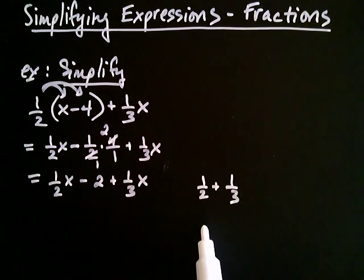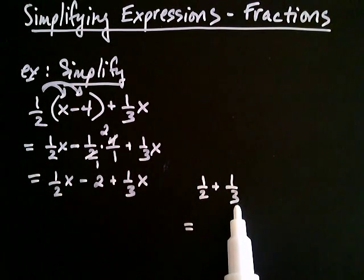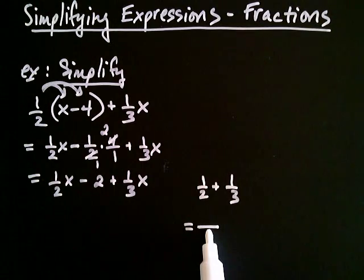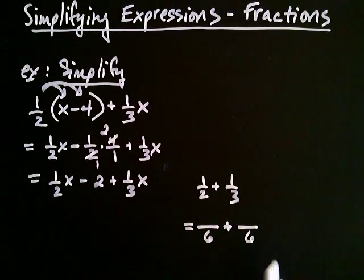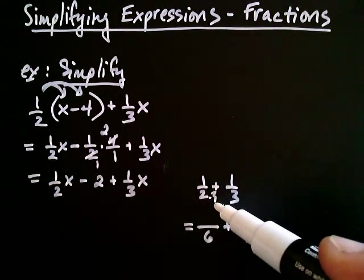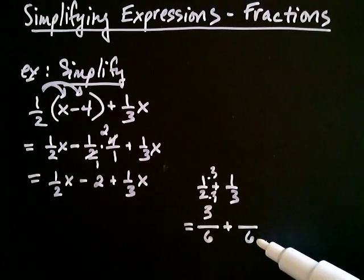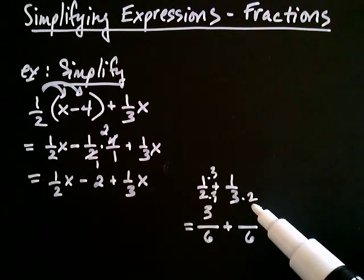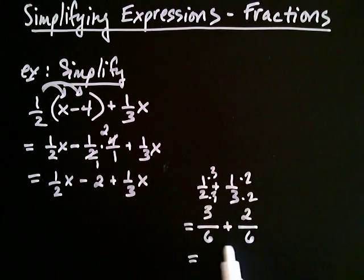What's important when you're adding or subtracting fractions is that you have a common denominator. The smallest number that both two and three go into evenly is six. So I'm going to change both denominators to six: something over six plus something over six. Two becomes six by multiplying by three, so the top also gets multiplied by three: one times three is three. Three becomes six by multiplying by two, so the top gets multiplied by two: one times two is two. Now that the fractions have a common denominator of six, I add the numerators: three plus two is five, giving five over six.